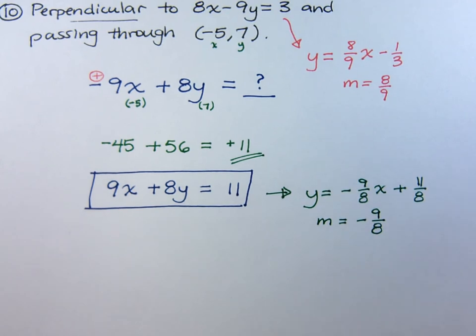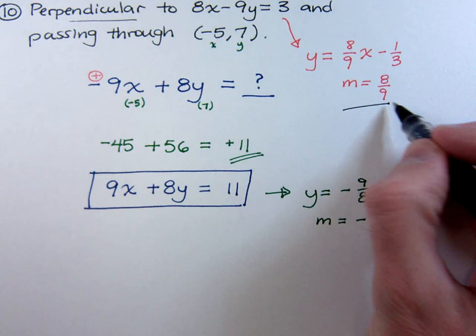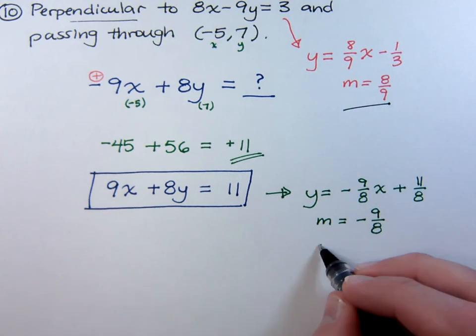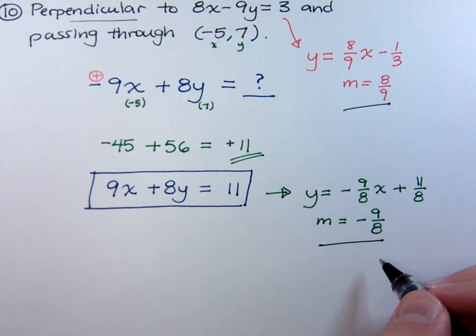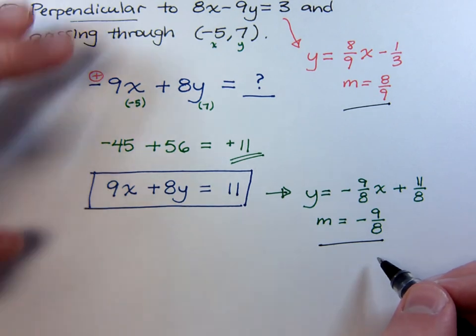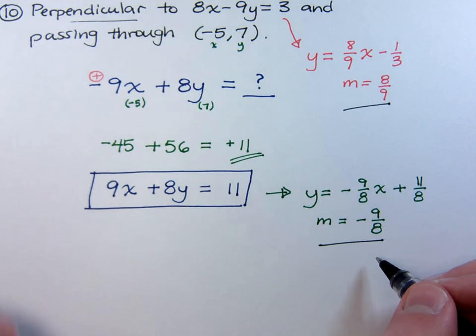When you compare these two slopes, positive 8 over 9, negative 9 over 8, these guys are negative reciprocals. So you see that the two lines that we have are perpendicular, so we're good.